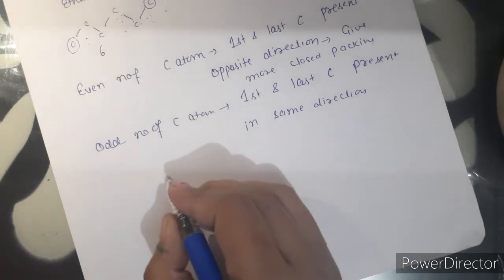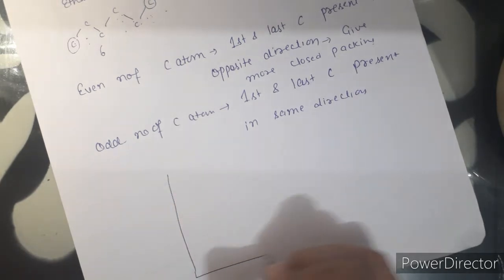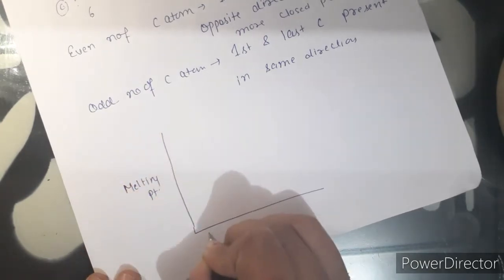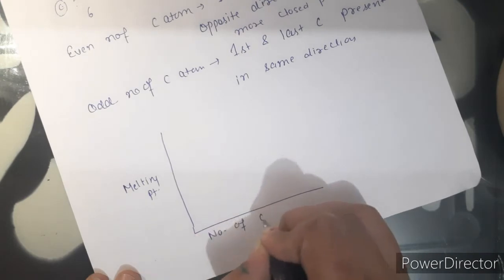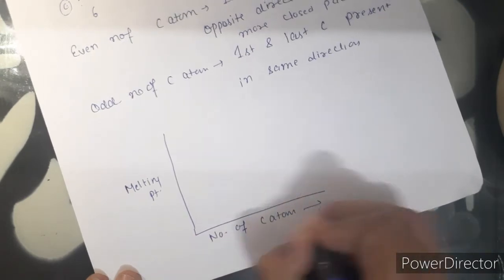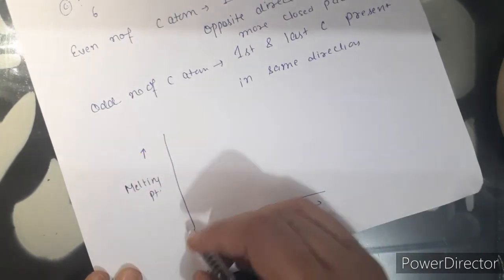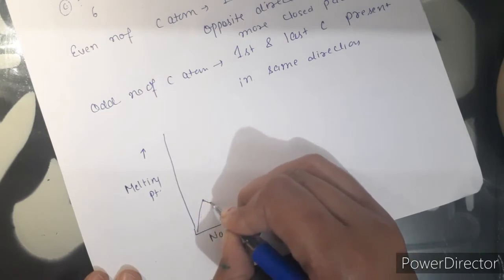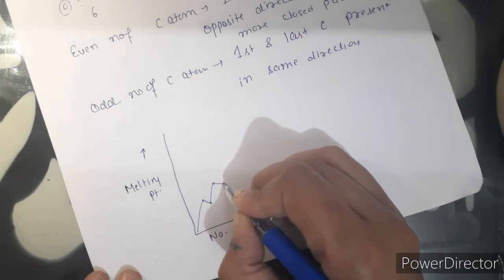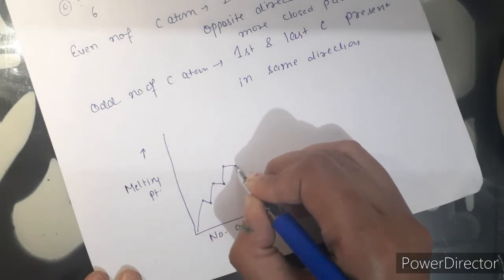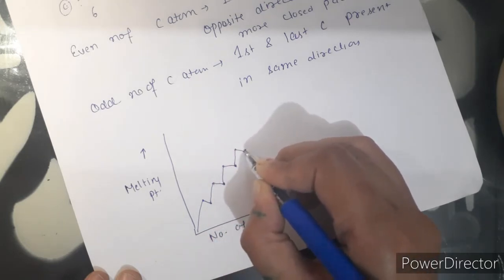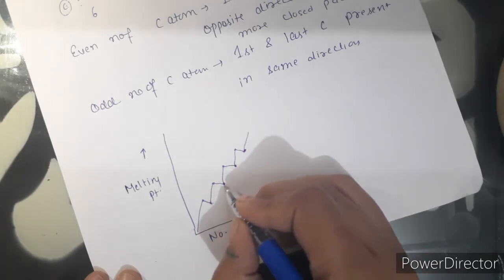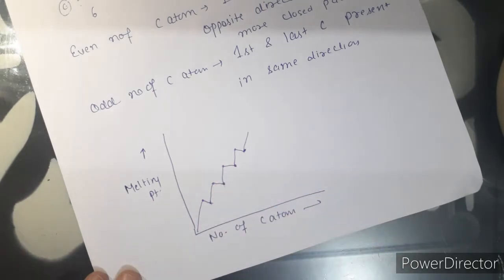So the alkane containing even numbers of carbon atoms has a higher melting point than the odd number of carbon atoms. If we plot a graph between melting point and number of carbon atoms, the even-carbon alkanes graph is higher than odd-carbon alkanes.